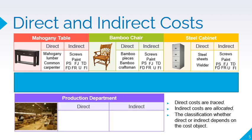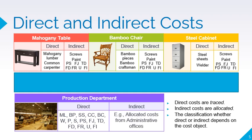If our cost object is the entire production department instead of the mahogany table, bamboo chair, and steel cabinet, then all the costs mentioned earlier will be considered direct costs, since these costs are incurred by the production department. An indirect cost to the production department may include costs from the administrative offices, such as the cost of processing payroll and material requisitions, allocated to the production department based on the number of employees and number of material requisitions. In cost accounting, though, when we say cost object, we usually mean the product or service being produced or rendered, unless otherwise specified.